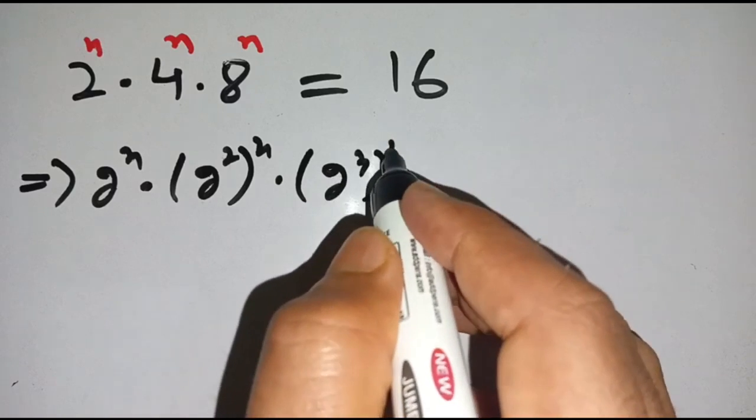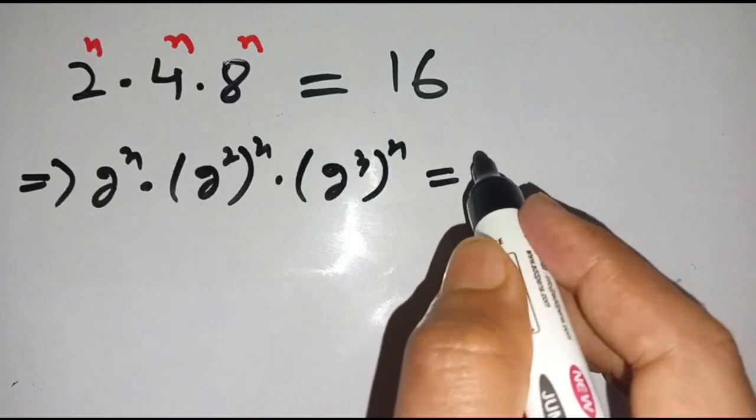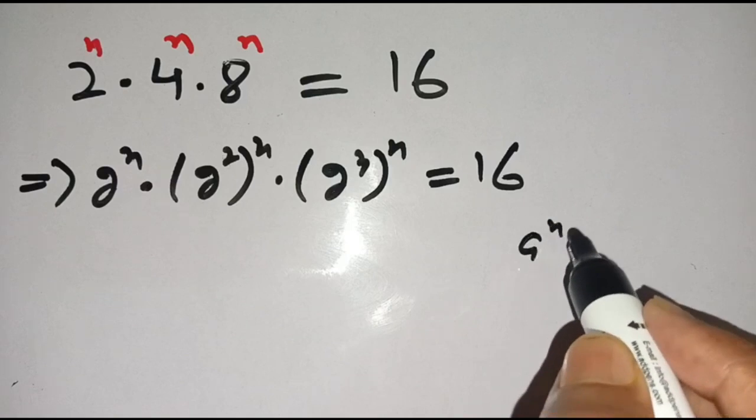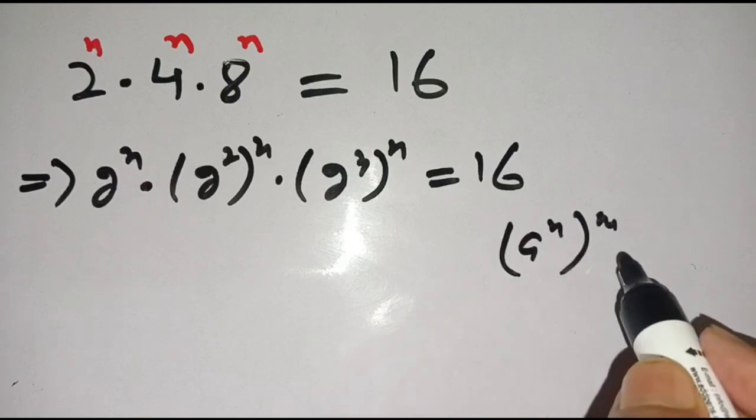And we know that if a power n bracket m, then it is equal to a power n times m, means that we can multiply its power. Now apply this identity on the left hand side.